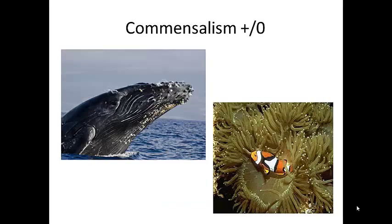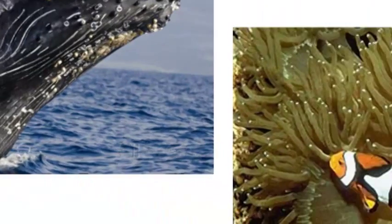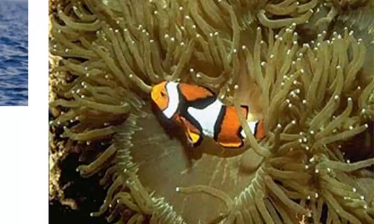Commensalism is a relationship where one species benefits and the other is not affected. This is the case where barnacles grow on a humpback whale. The barnacles benefit because they get shelter and constant access to new food sources as the whale swims. While you might think the barnacles look ugly, the whale is not impacted by them negatively or positively. Another example is a clownfish living in a sea anemone, like in Finding Nemo. The clownfish gets the protection that the stinging anemone provides from predators, but the anemone is neither helped nor harmed.